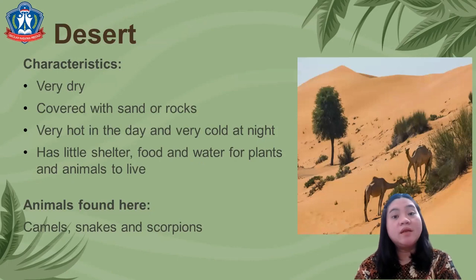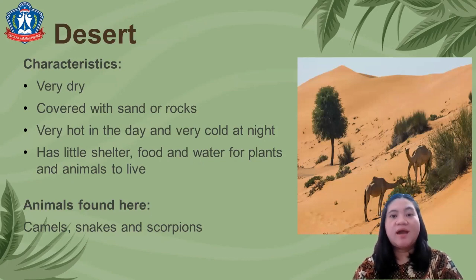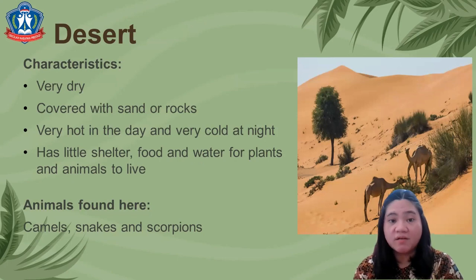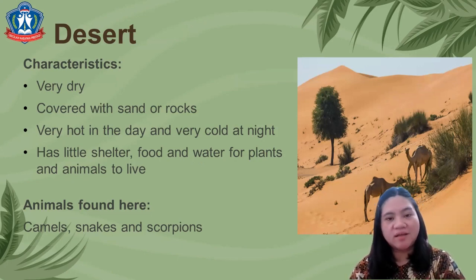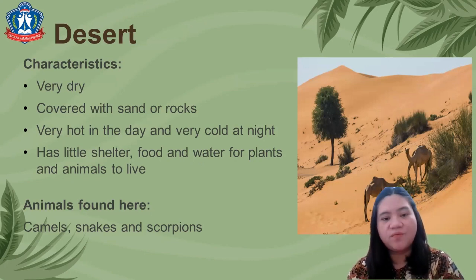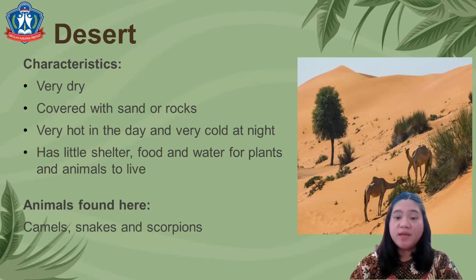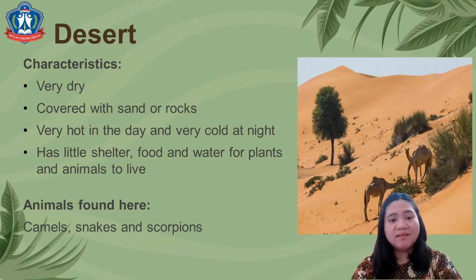Next, desert. The characteristics are: very dry, and covered with sand or rocks. It is very hot in the day and very cold at night. There is little shelter and water for plants and animals to live. Animals found in the desert include camels, snakes, and scorpions.